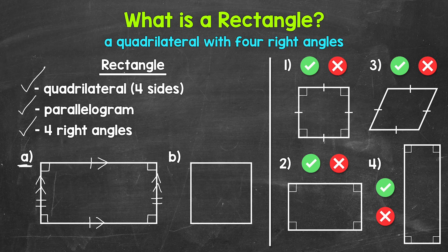Just remember, rectangles are quadrilaterals with four right angles. And to add to that, rectangles are parallelograms — they're just more specific or special parallelograms, because all four angles need to be right angles.